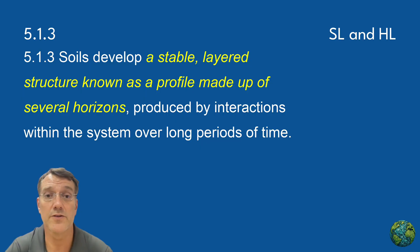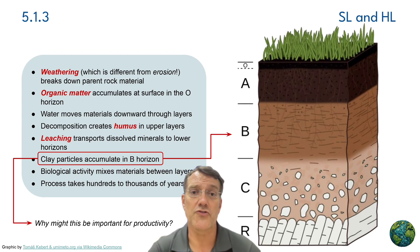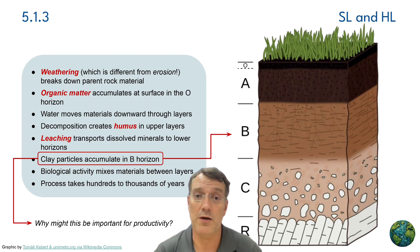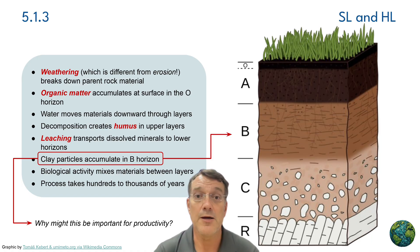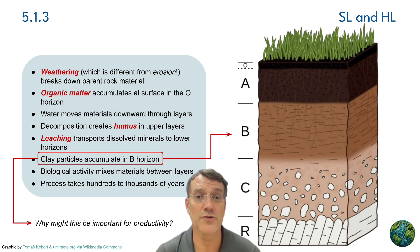Soils develop a stable, layered structure known as a profile, made up of several horizons, produced by interactions within the system over long periods of time. This layered structure forms through several key processes: weathering breaks down parent rock material into smaller particles; organic matter accumulates at the surface in the O horizon; water moves material downward through the layers; and decomposition creates humus in the upper layers. Leaching transports dissolved minerals to lower horizons, and clay particles accumulate in the B horizon, while biological activity constantly mixes materials between these layers. This entire process takes hundreds or even thousands of years, creating distinct zones where different processes occur.